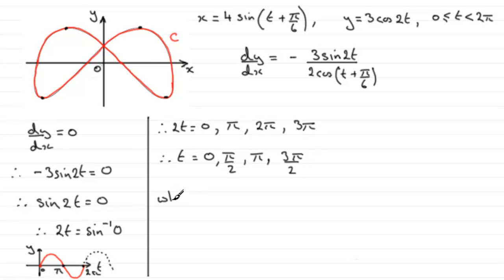So we find that when t equals 0, if we just substitute this into here, we get x equals 4 times the sine of pi upon 6. 4 sine pi upon 6.